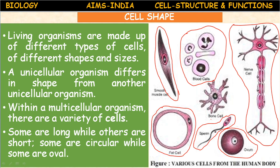Reproductive cells or gametes contain chromosomes that are involved in the hereditary transmission of characters. The total cells in the body are divided into two categories: somatic cells, which perform vegetative functions, and germ cells, which perform reproductive functions.